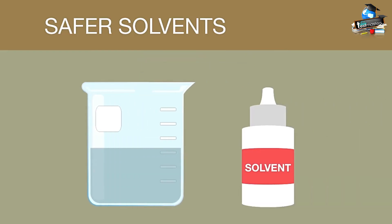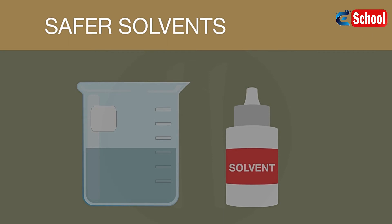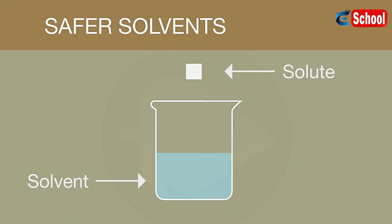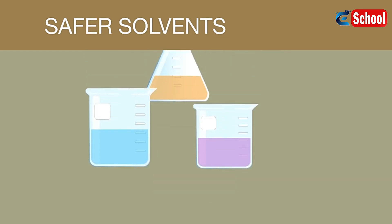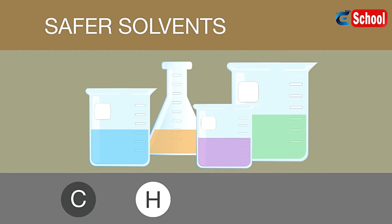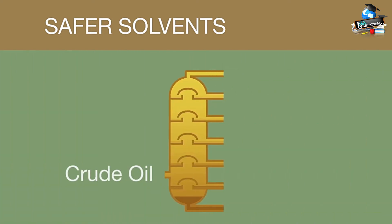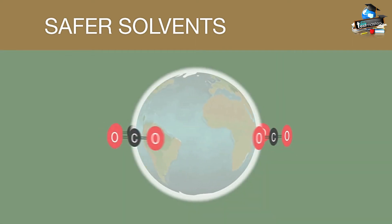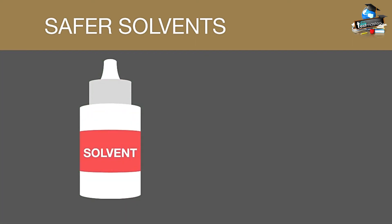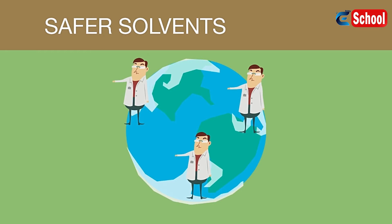Chemical reactions often need a solvent in order for them to take place. A solvent will dissolve a solute, meaning two or more soluble compounds may then react with one another to form a new product. The issue is that a lot of chemical processes involve organic solvents — those containing carbon and hydrogen and sometimes halogen groups. Organic solvents are usually obtained from the fractional distillation of crude oil, an environmentally unfriendly process that uses a lot of energy and produces greenhouse gases. The solvents themselves are usually environmentally unfriendly and need to be disposed of carefully. Chemists around the world are looking towards green chemistry and the development of safer solvents.